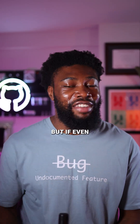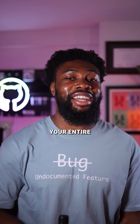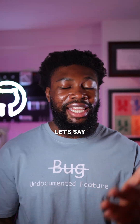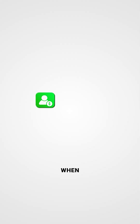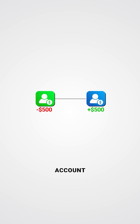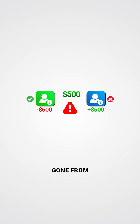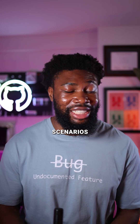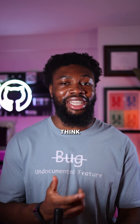How do you handle a scenario where multiple steps all need to succeed, but if even one of those steps fails, your entire system ends up in a broken state? Let's say you're building a money transfer feature in your application. When someone transfers money, two things need to happen: the amount needs to be deducted from the sender's account and credited to the receiver's account. These are two separate actions, but if the first succeeds and the second fails — maybe due to a network glitch or a request timeout — your system is now in a bad state. The money's gone from one account but hasn't shown up in the other. That's a serious issue, but scenarios like this are way more common in software development than you think.